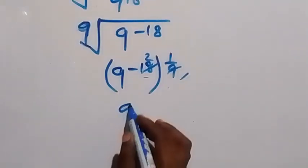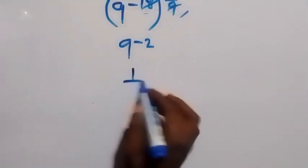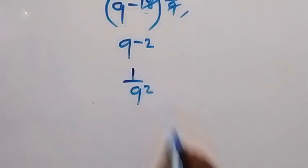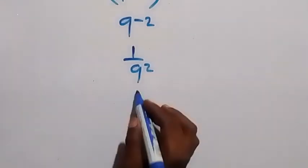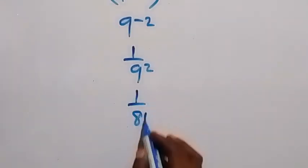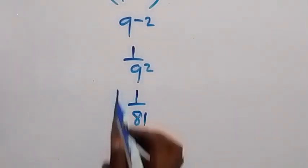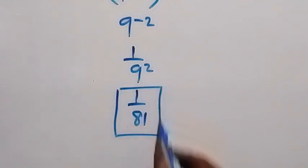This will give us 9 raised to power minus 2, which you can write again as 1 over 9 to the power 2, which is the same thing as 1 over 81. Nine to the power 2 is 9 times 9, which is 81. Therefore, we have the simplified form to be 1 over 81.